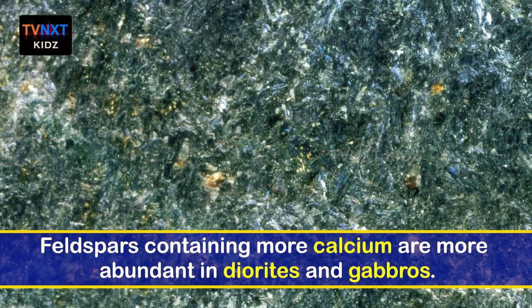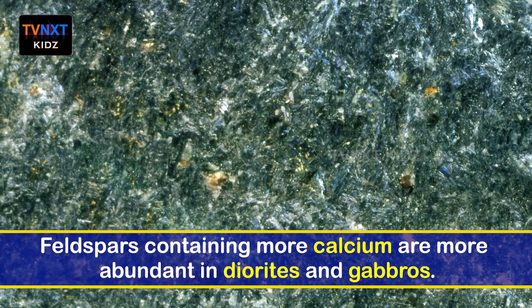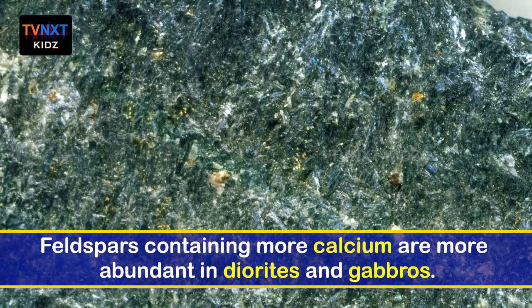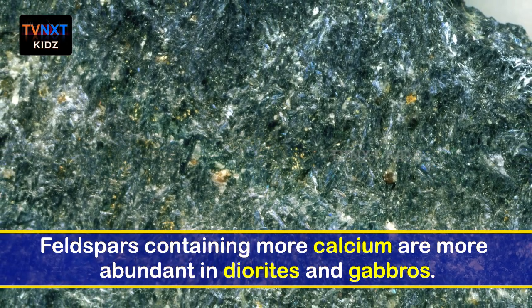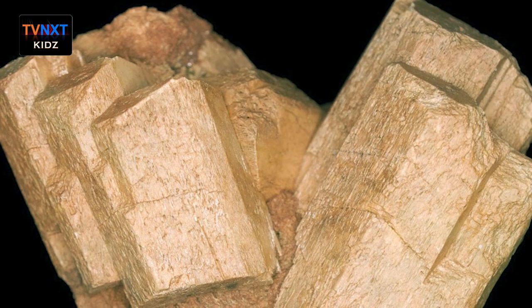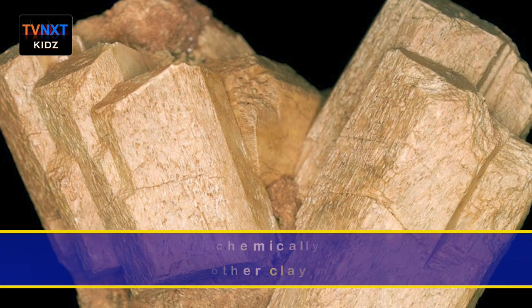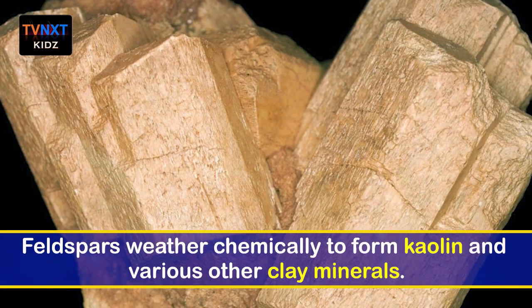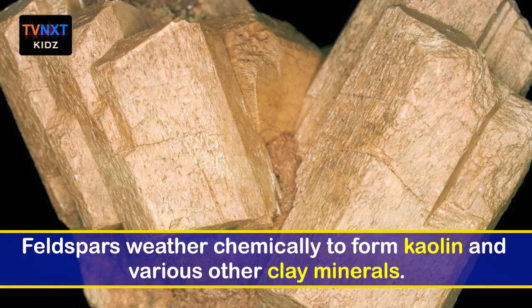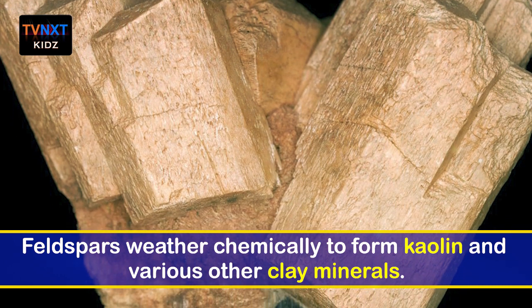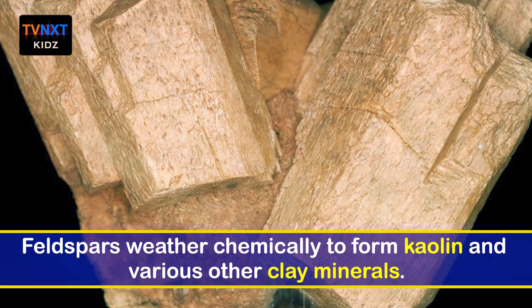Feldspars containing more calcium are more abundant in diorites and gabbros. Feldspars weather chemically to form kaolin and various other clay minerals.